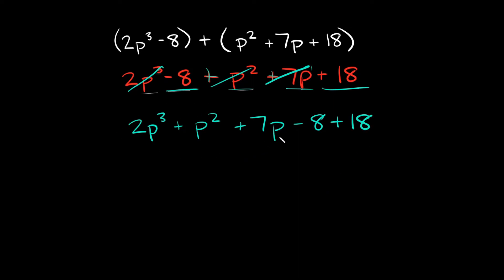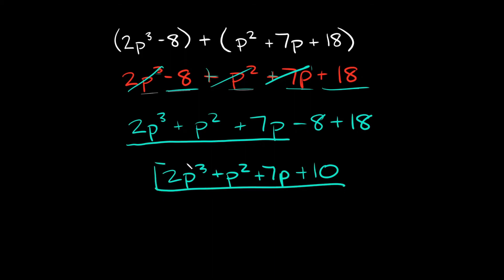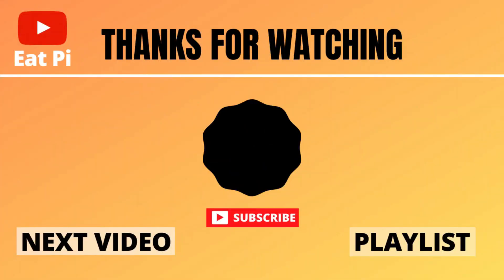We can't combine any of the variable terms together, but we do have these two numbers at the end that we can combine. What's negative 8 plus 18? That's positive 10. So we bring down the rest: 2p cubed plus p squared plus 7p plus 10. That's your answer. If you found the video helpful, leave a thumbs up below, and let me know in the comments if you have questions or want to see other examples. Check out the playlists attached, and I'll see you there.